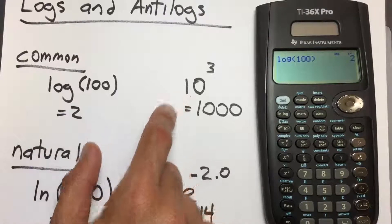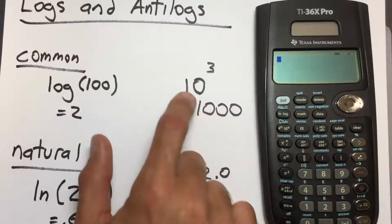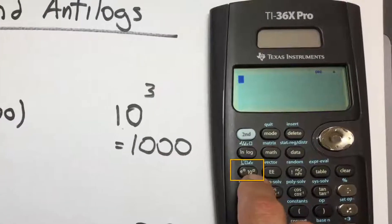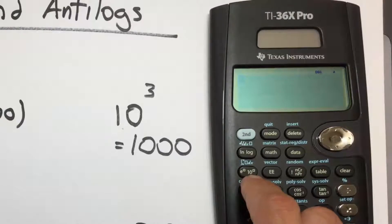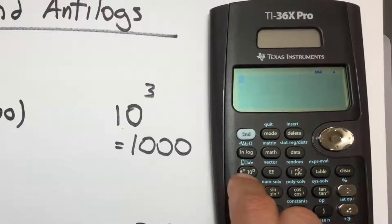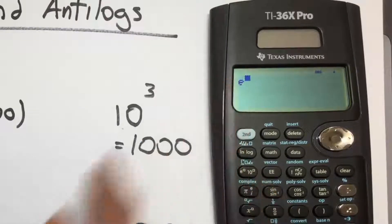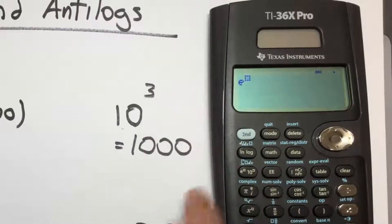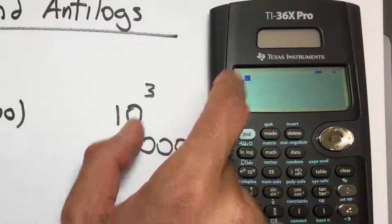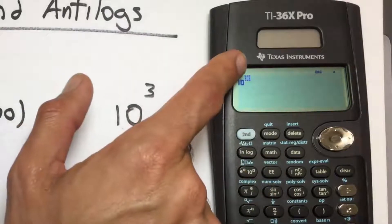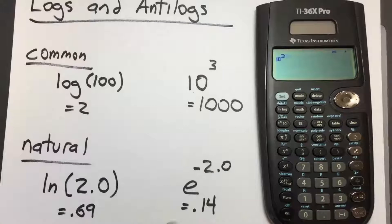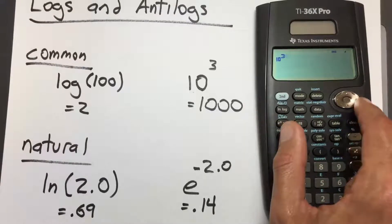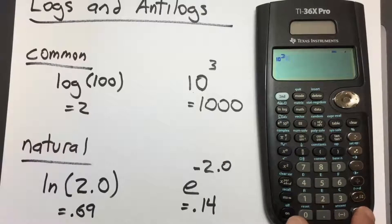To take the anti-common log, clear the screen. We have a 10 with a box above it on this key, underneath the logarithm key. Note it is written 2nd, so we must press this key twice. If we press it once we get lowercase e — that comes later. Press it a second time and it gives us 10 with a box above it for the exponent. Place 3 inside the box, press right on the oval to escape the exponent, and press enter. That gives us 1000 — correct.